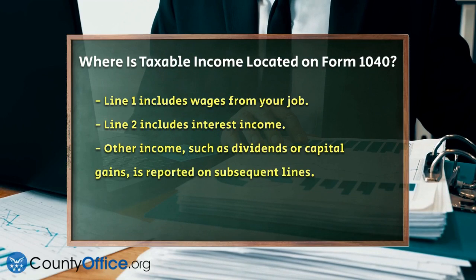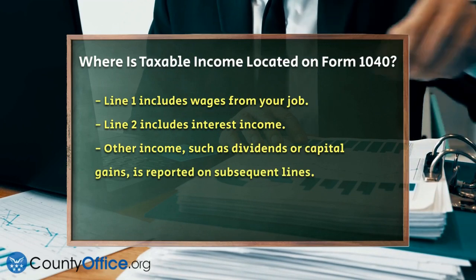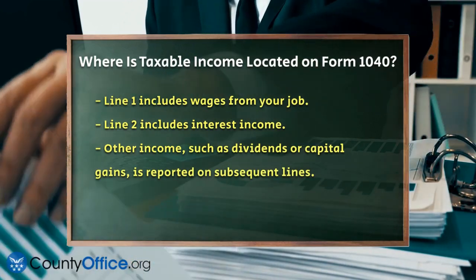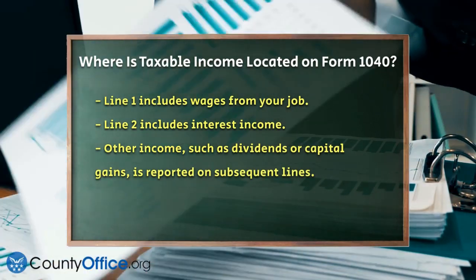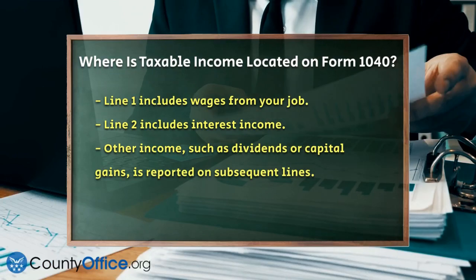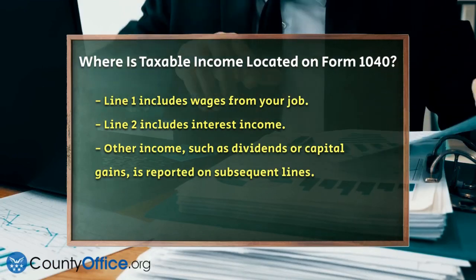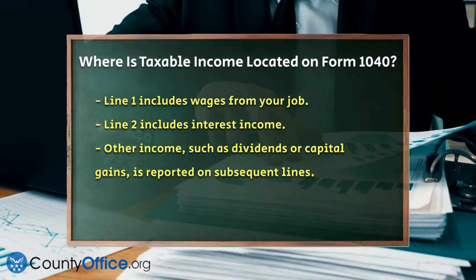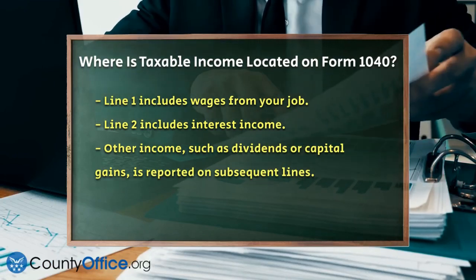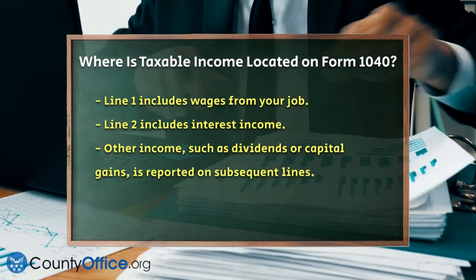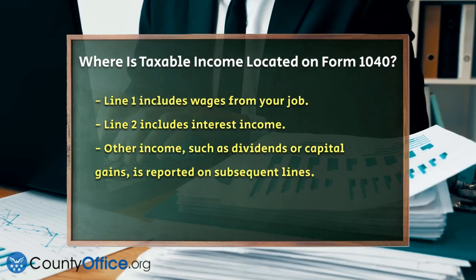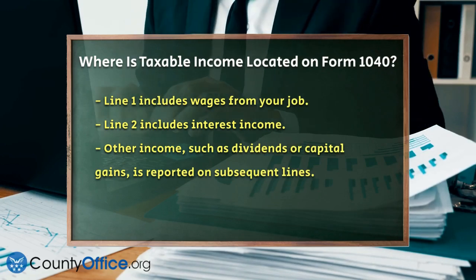First, you'll report all your income sources on Lines 1 through 9 of Form 1040. This includes your wages from your job, reported on Line 1, interest income on Line 2, and any other income you might have, such as dividends or capital gains.